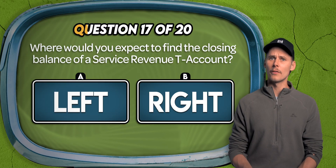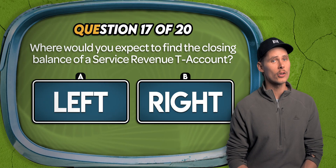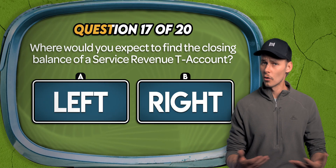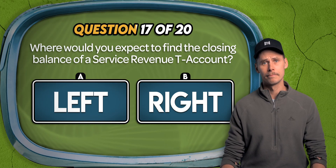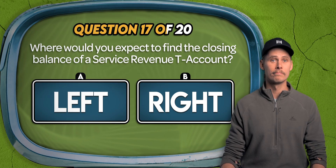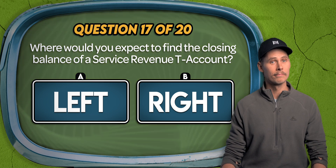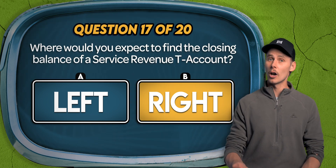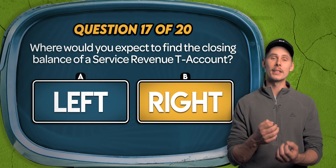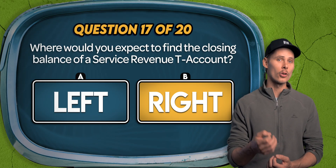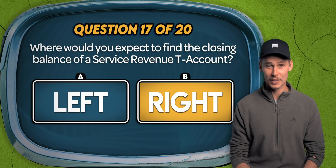Question 17. Where would you expect to find the closing balance of a service revenue T-account? On the left or on the right? B. Service revenue is a type of revenue, so it's a normal credit account. We'd expect to find its closing balance on the right or the credit side of the T-account.